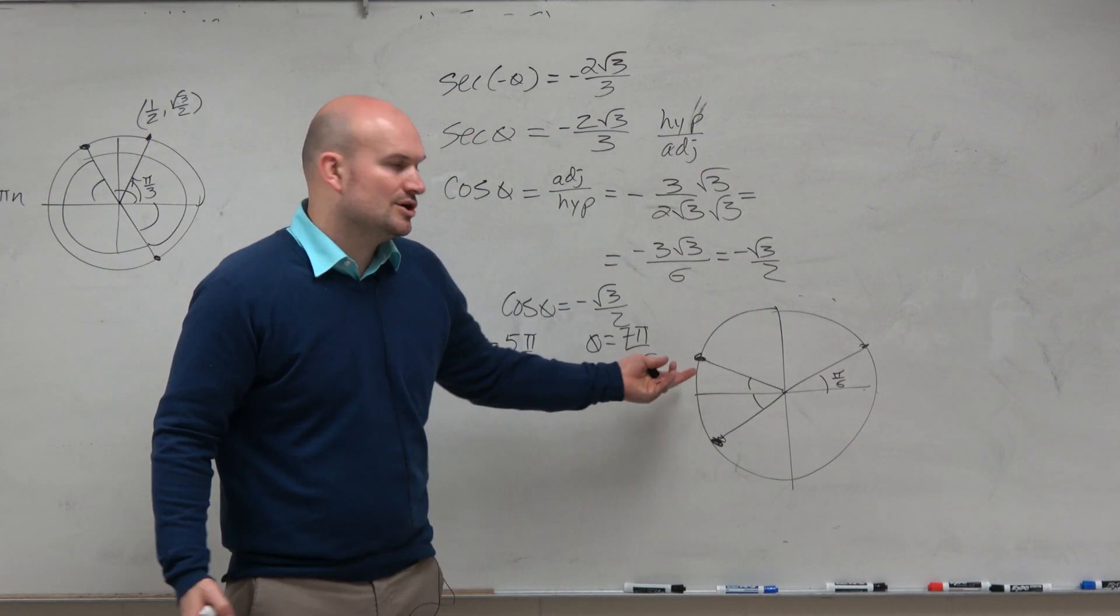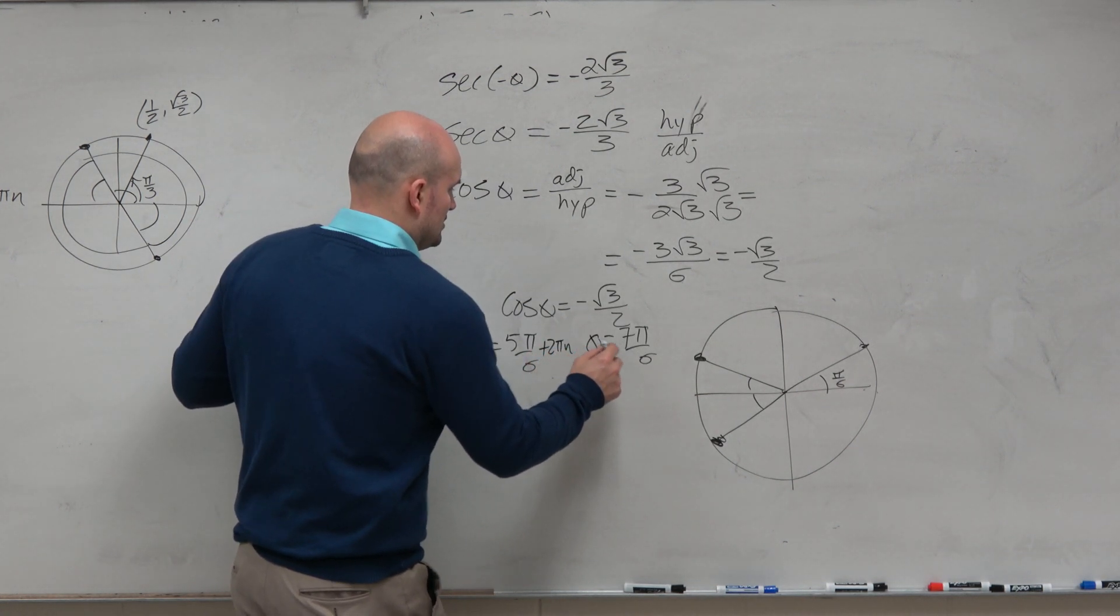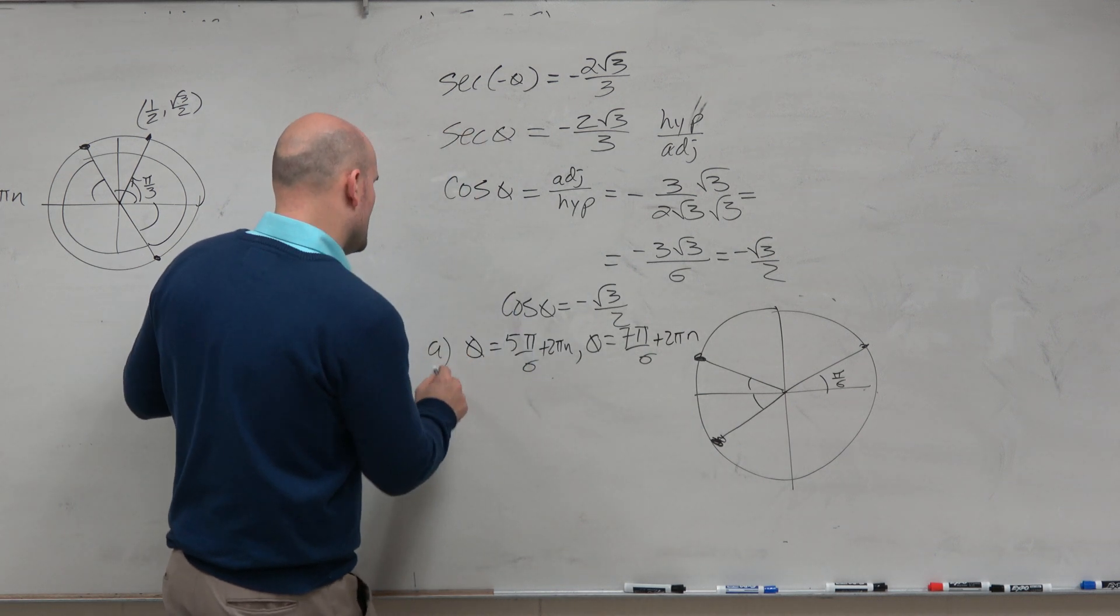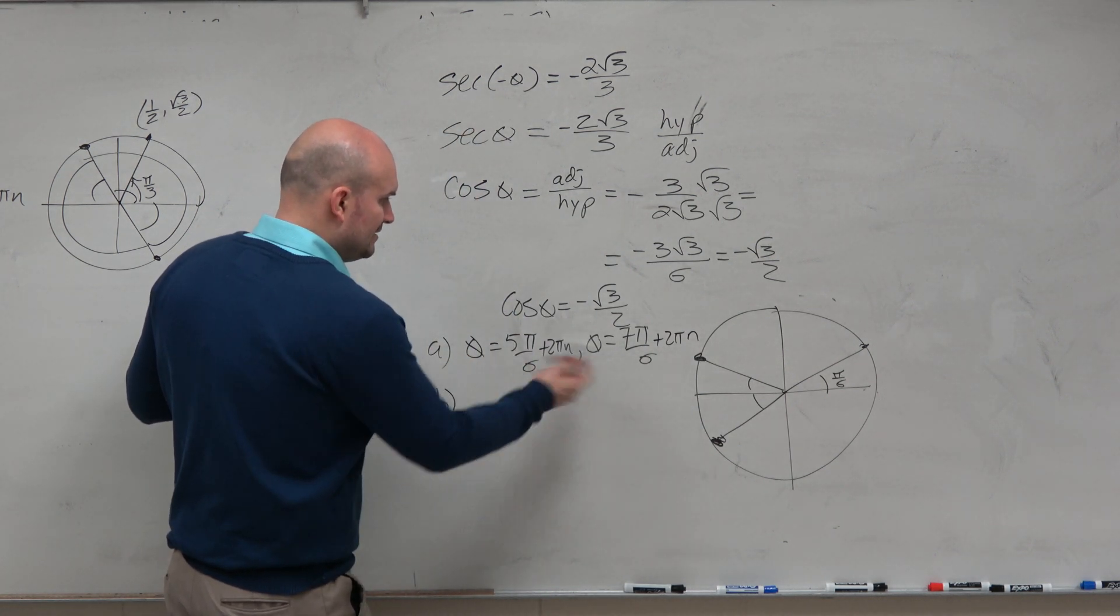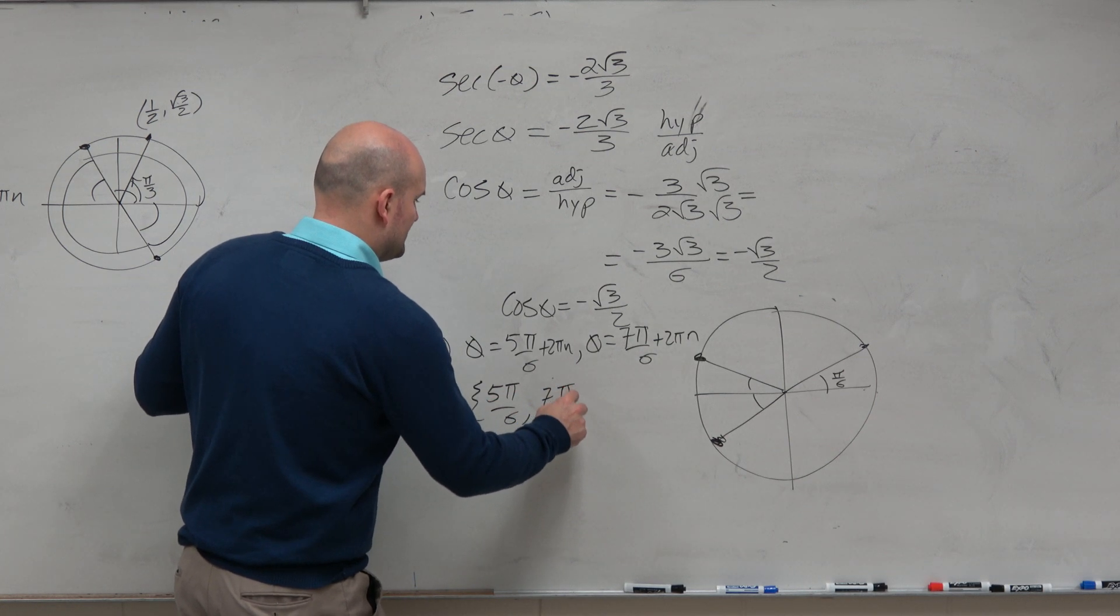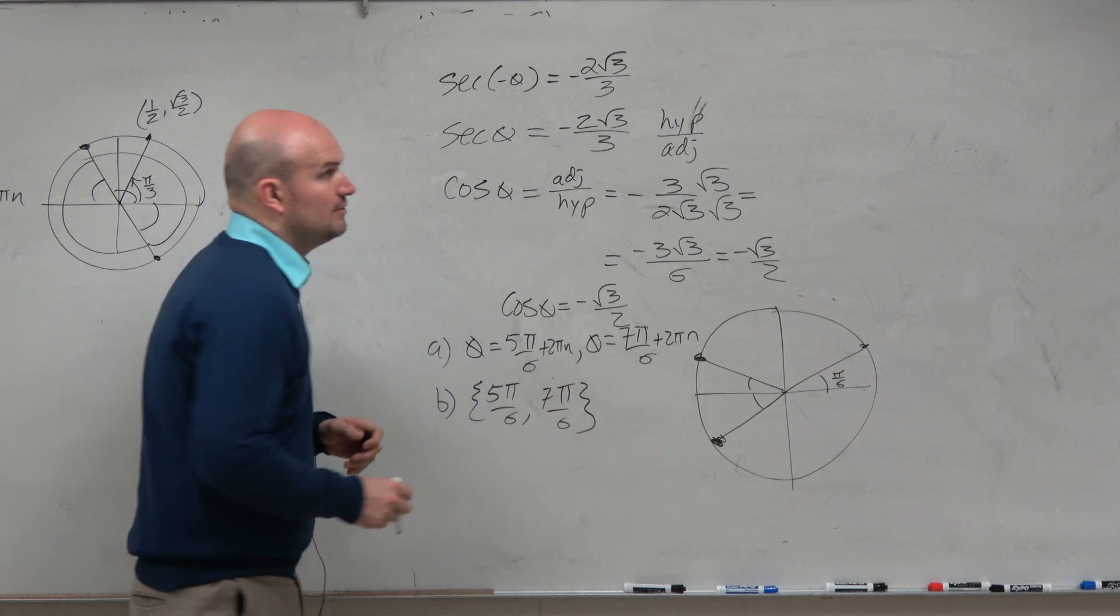No. So you just have to add 2 pi into both of these. That was for all solutions. And then for B, the only answers that satisfy the unit circle is 5 pi over 6 and 7 pi over 6. Any questions on these two?